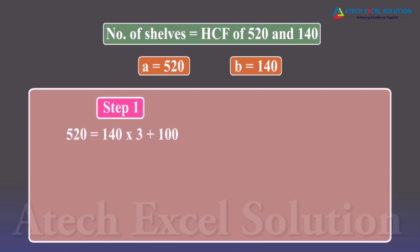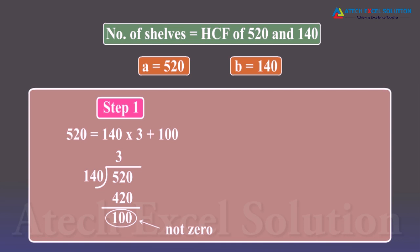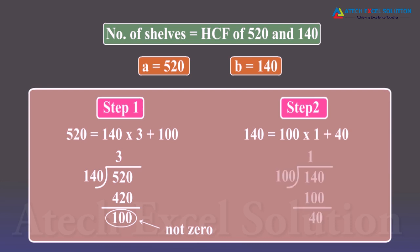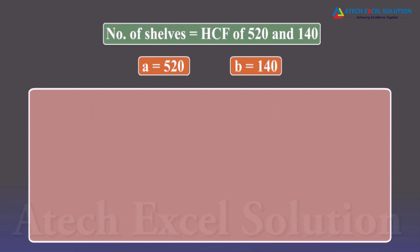First step: apply the division lemma to 520 and 140 to get 520 = 140 × 3 + 100. Since the remainder 100 is not zero, apply the division lemma to 140 and 100 to get 140 = 100 × 1 + 40.